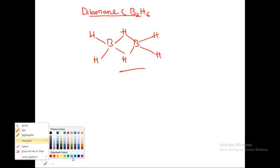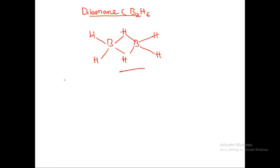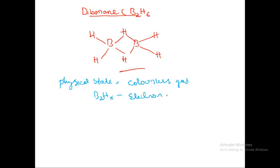The physical state of diborane: it is a colorless compound. B2H6 is an electron-deficient compound. These two points you have to keep in mind.